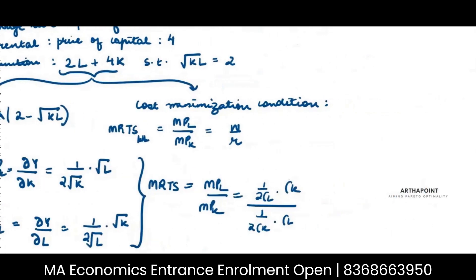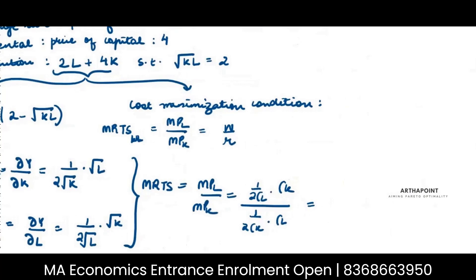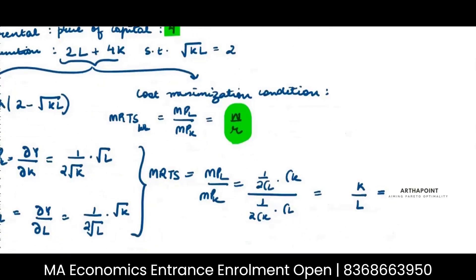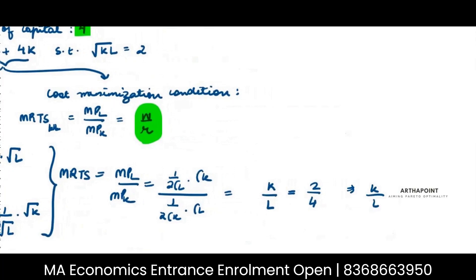So if I solve this what will I get? I will get K by L, and I have to equate this equal to W by R, and I know W is 2 and R is 4, so which means 2 by 4. So what will I get? I will get K by L is equal to 1 by 2, which means 2K is equal to L.